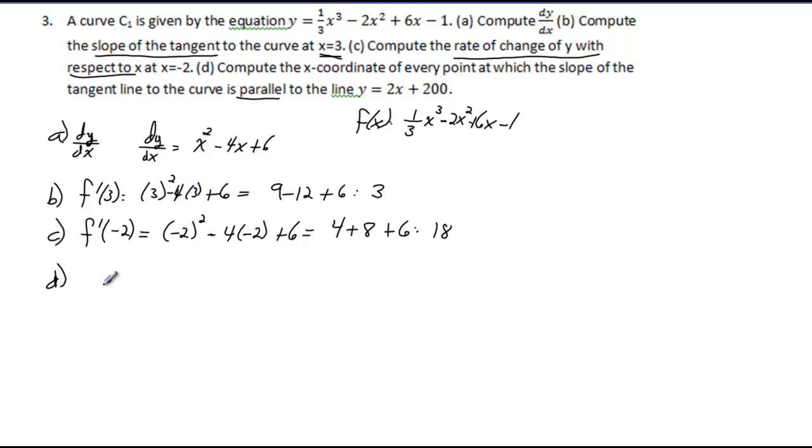is parallel to the line y equals 2x plus 200. When two lines are parallel, the slope of one equals the slope of the other. When two lines are perpendicular, their slopes are opposite reciprocals—you flip the slope and multiply by negative one.